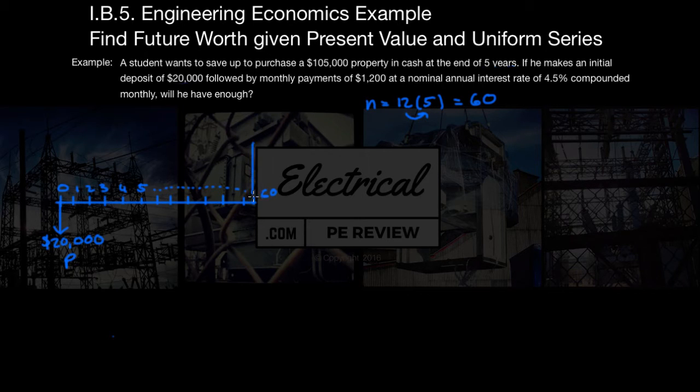We want to know what this future value is. And of course, along the way, we are going to have uniform payments equal to A equals $1,200. So every one of these payments from N equals 1 all the way up to N equals 60 is going to be A equals $1,200. And again, the question really is just asking, what is the future worth? Is the future worth going to equal $105,000?